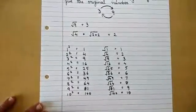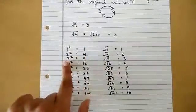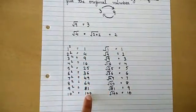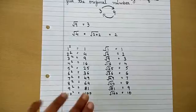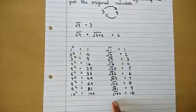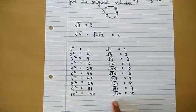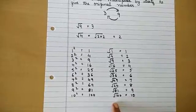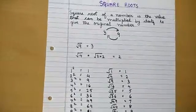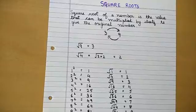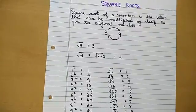These are also known as perfect squares. The square roots of these numbers are whole numbers, so they are called perfect squares. You must remember the 1 through 10 perfect squares. In our next video, we will learn how to find out square roots. Thank you.